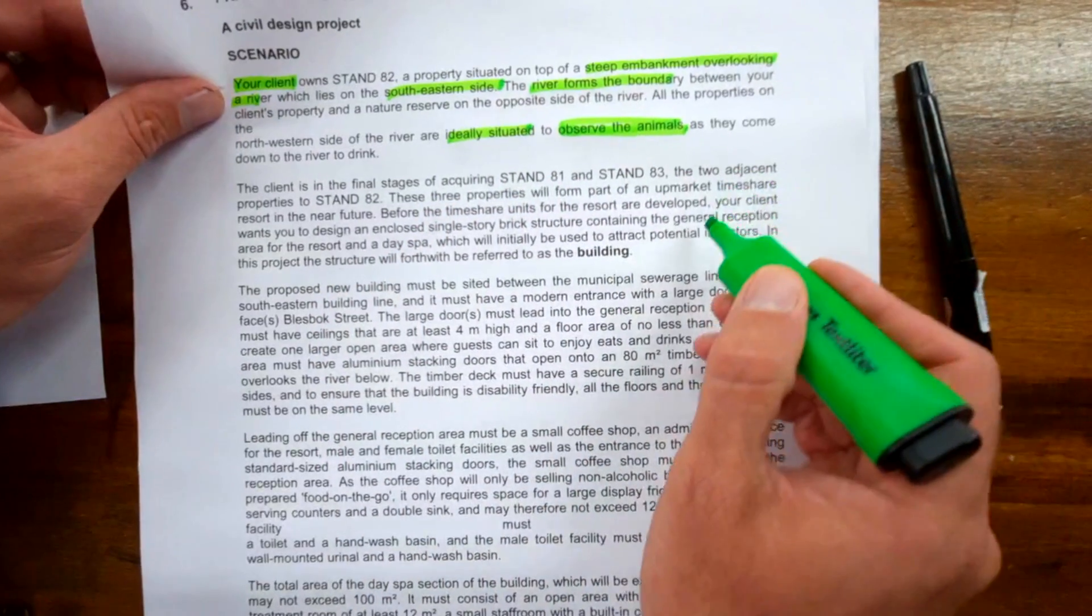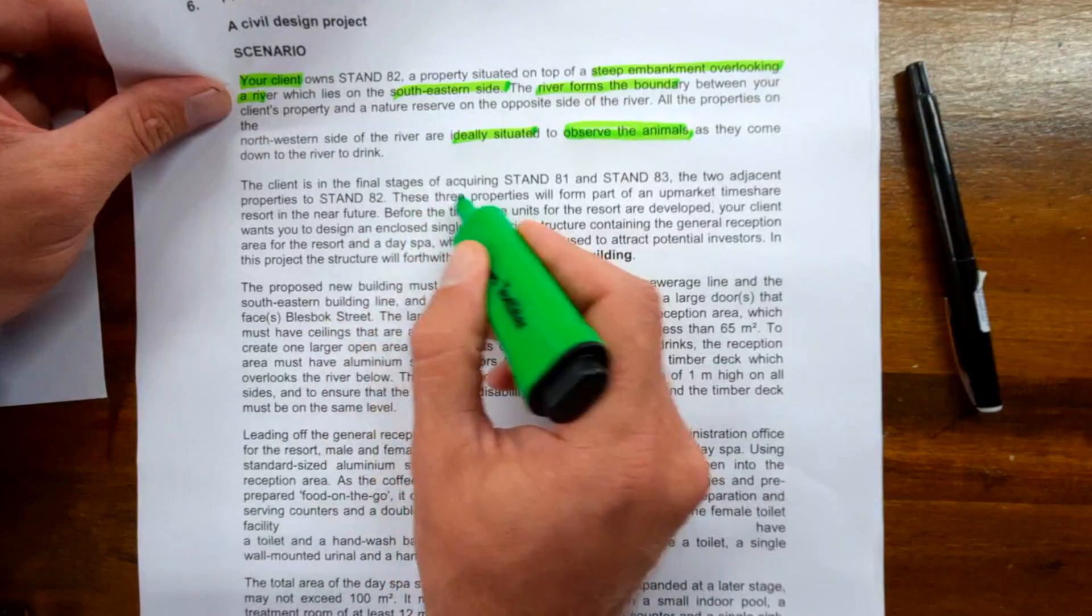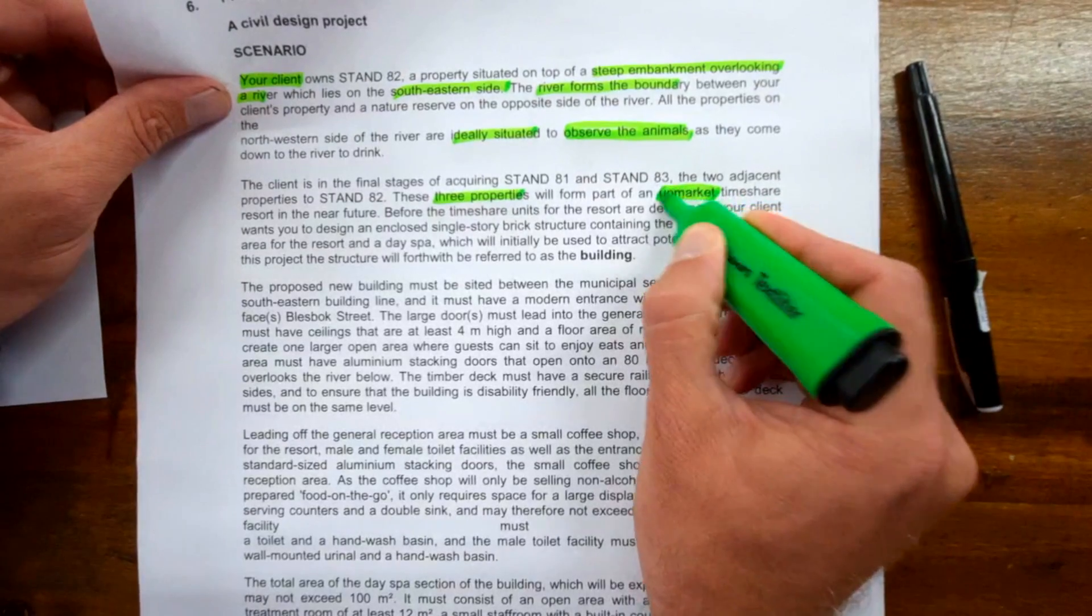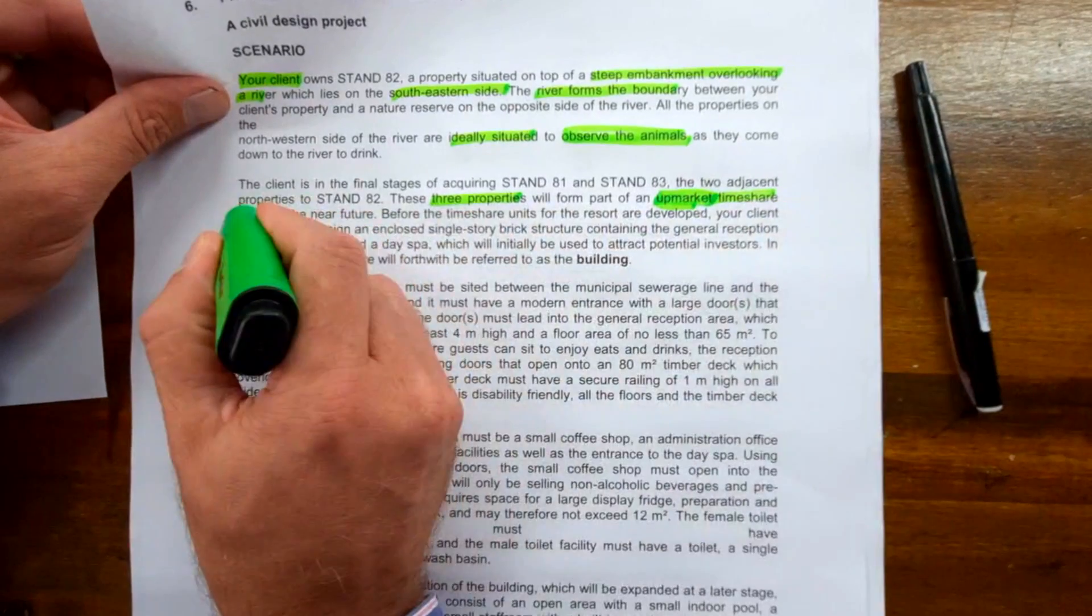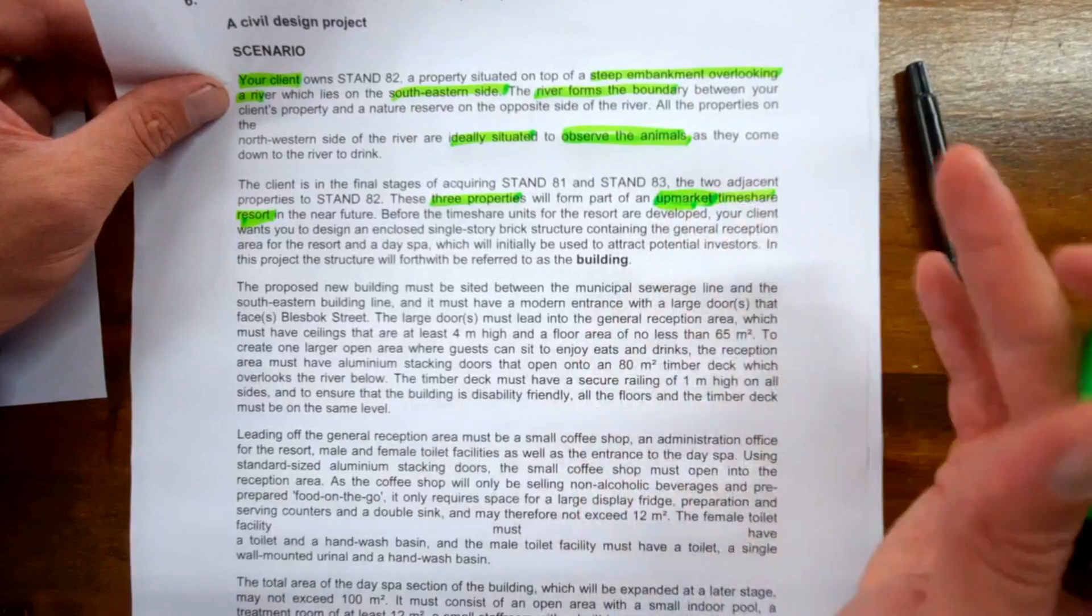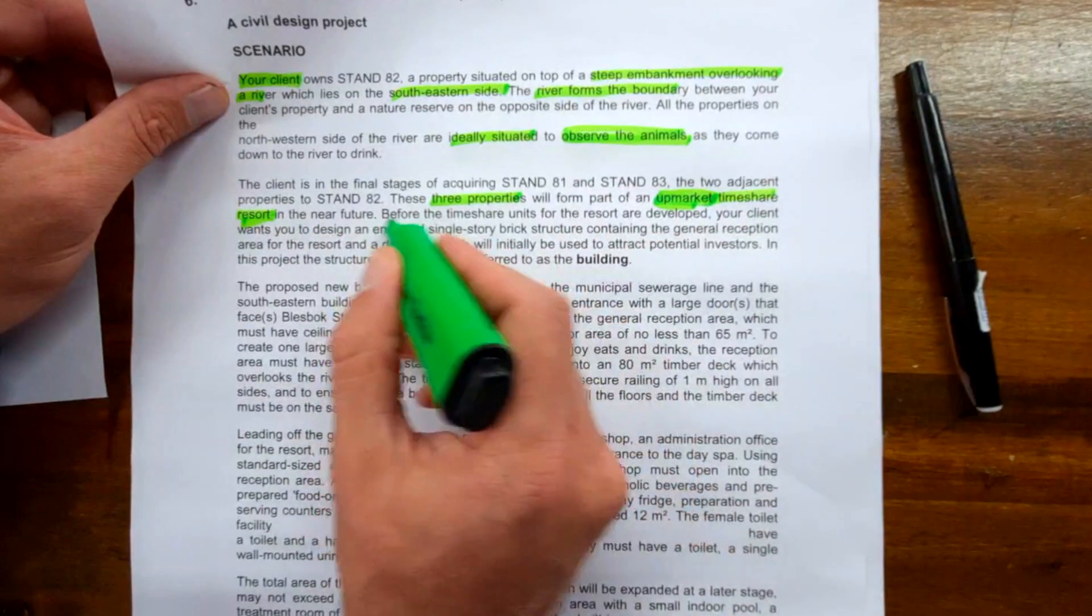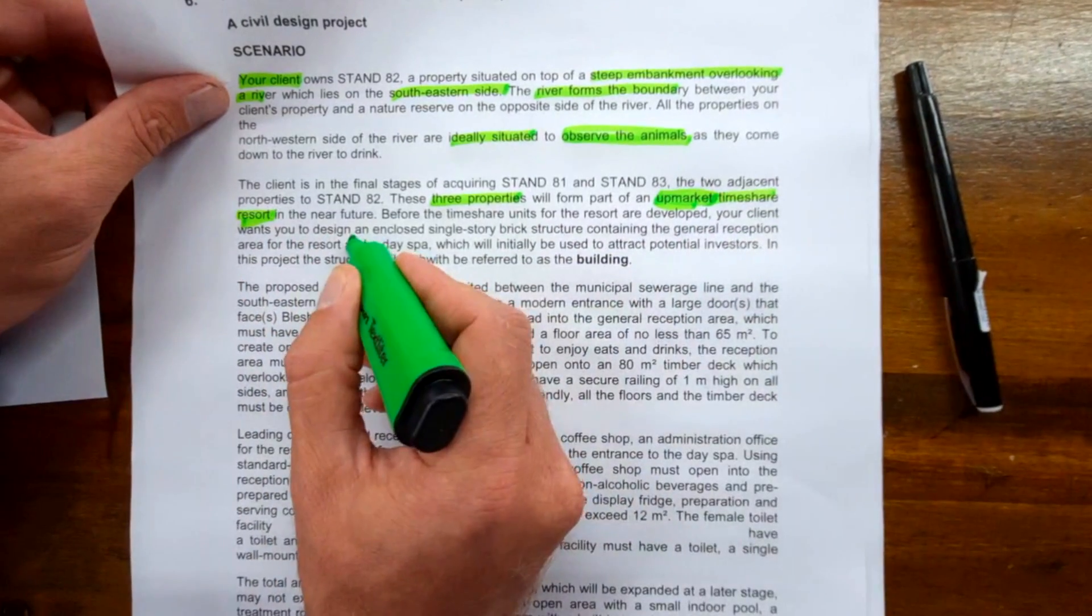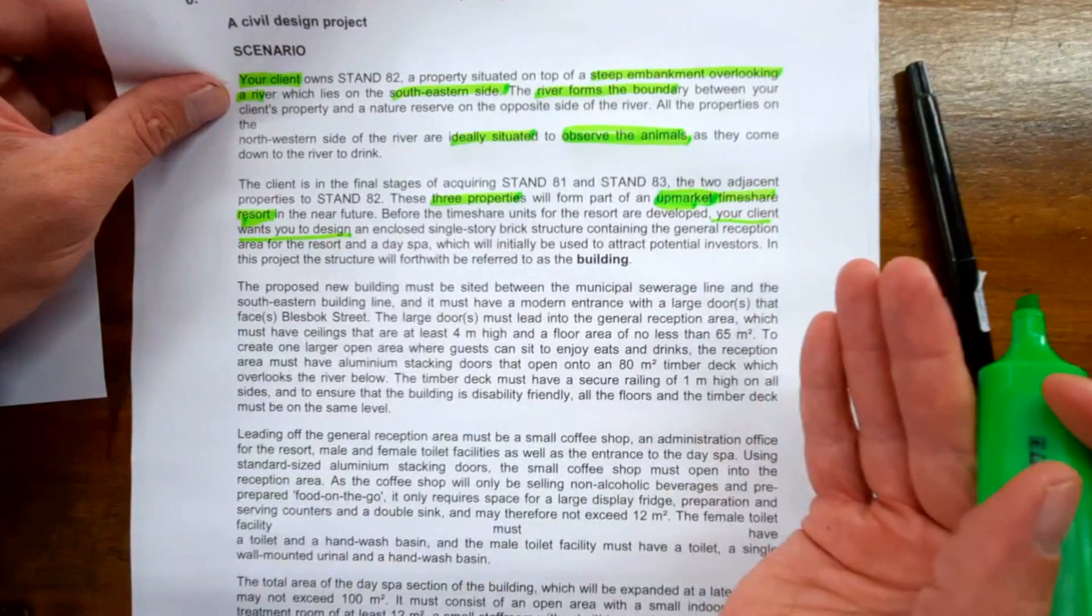The client is in the final stage of acquiring Stands 81 and 82, two adjacent properties to Stand 82. These three properties will form part of an upmarket, exclusive timeshare resort. Very important word here: it's not a two-star development, it's going to be a five-star upmarket timeshare resort.